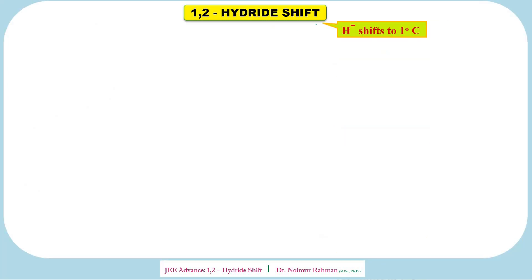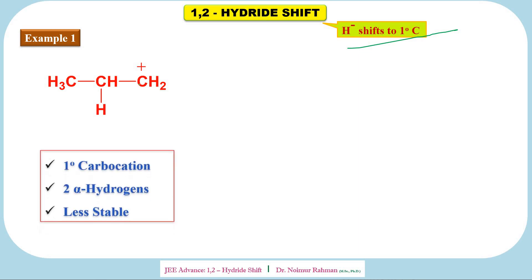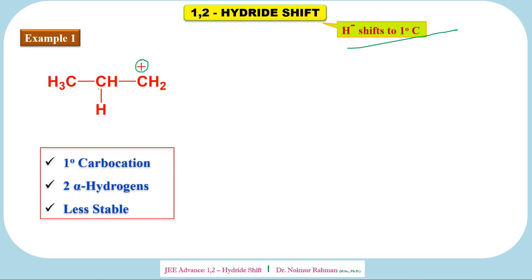In a 1,2-hydride shift, a hydride (H⁻) gets shifted to the primary carbon. Let's take an example: this is a carbocation — it is a primary carbocation because the positively charged carbon is linked to only one alkyl group. We can see that there are two alpha hydrogens. Alpha hydrogen means the hydrogen on the alpha carbon, which is the carbon adjacent to the positively charged carbon.